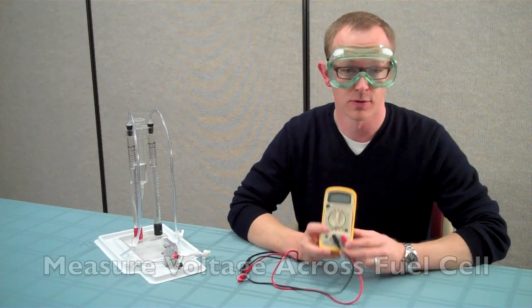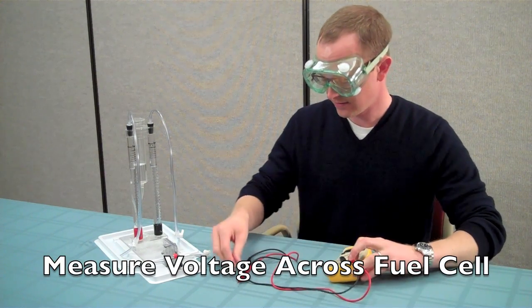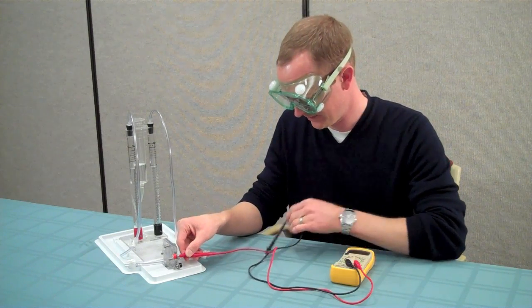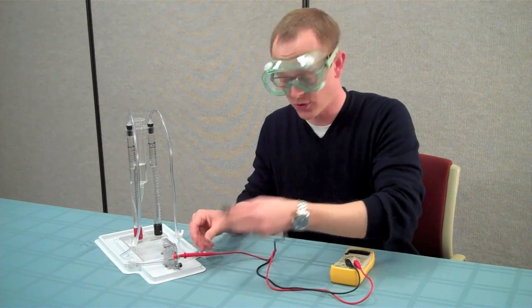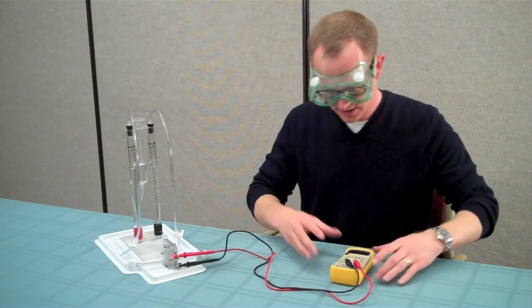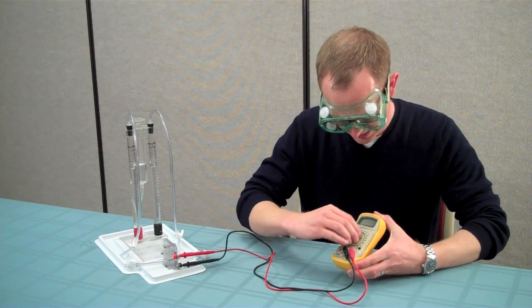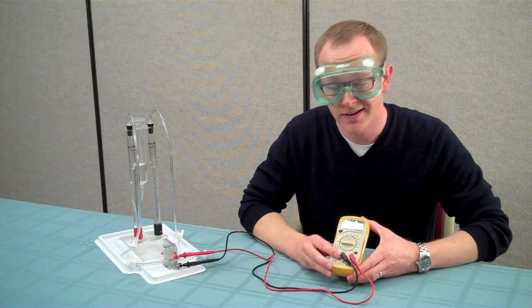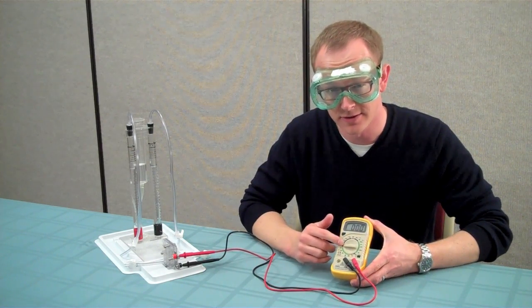Take a multimeter or a voltmeter and connect the red probe to the red electrode on the fuel cell. And take the black probe and connect it to the black electrode on the fuel cell. Set the multimeter to measure at least one volt. Now, because multimeters vary, you might need to consult the instruction manual that came with your particular multimeter.